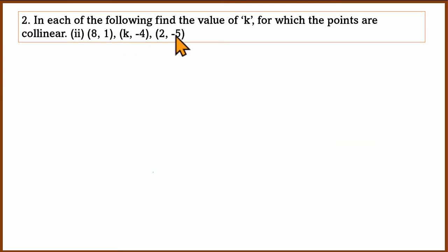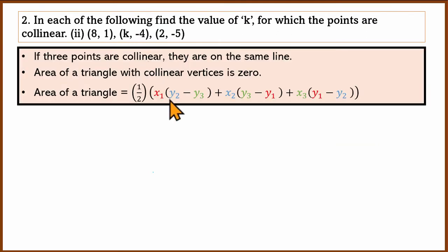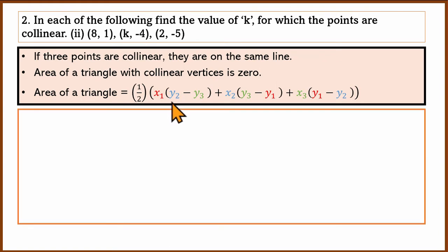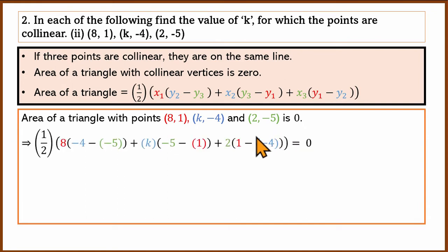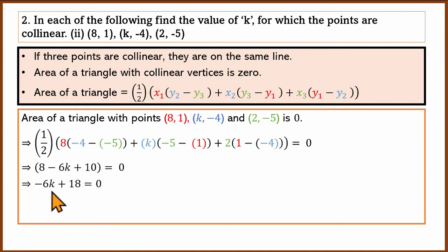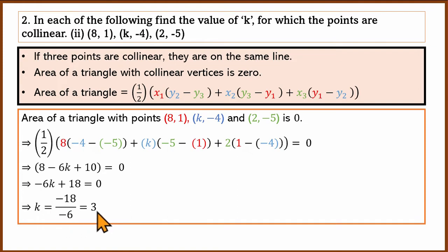In the second part, there are again 3 points and the same logic applies. The 3 points have area 0, so we substitute and simplify: 2 × 3 gives −6k + 18 = 0. Then k = −18 by −6, which is 3. So the k value for the second part is 3.